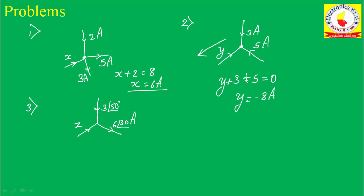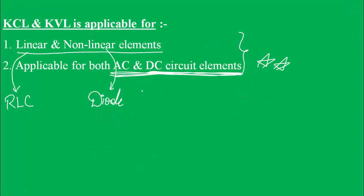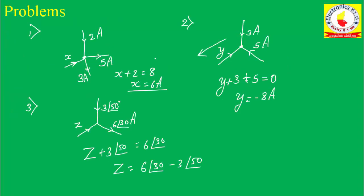Problem 3 is based on an AC network. The first two problems were DC; this one is AC. The incoming currents are z + 3∠50° and the leaving current is 6∠30°. So z = 6∠30° − 3∠50°. This confirms that KCL and KVL are applicable for both AC and DC networks, as well as for both linear and nonlinear elements.